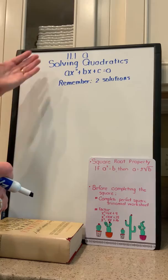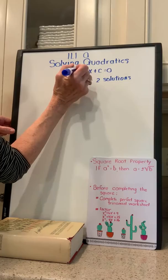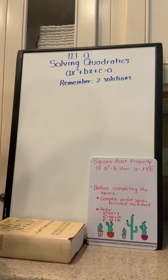We have finished chapter 10, so we're starting the last chapter, chapter 11, and we're going to be solving quadratics in the initial part of the chapter. A quadratic is in the form of ax squared plus bx plus c. Whatever your highest exponent is, that's how many solutions you're going to have. Because a quadratic is x squared, you're always going to have two solutions.